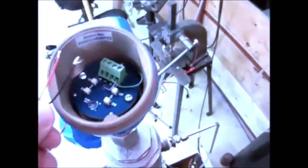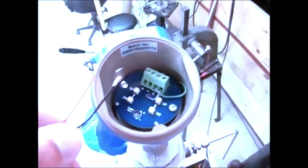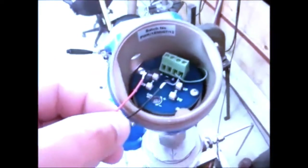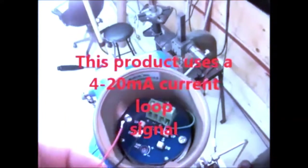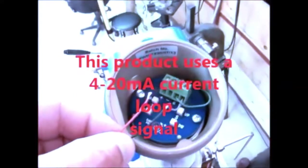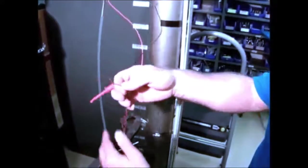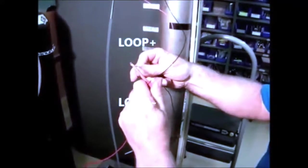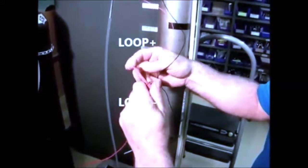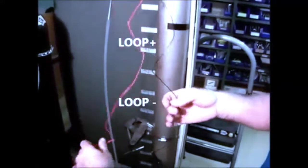Our first step will be to connect our loop power supply and ammeter to loop plus and loop minus, and we connect the other end to our calibrator.